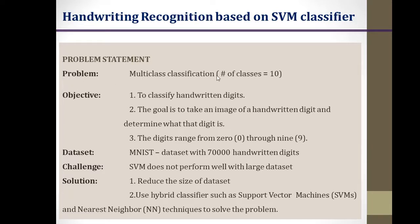This is the problem statement. We have considered handwritten digit recognition as our task. The handwritten digits range from 0 to 9, so the number of classes is 10. This classification task is basically a multi-class classification. The objective is to classify the handwritten digits — the goal is to identify the digit depending upon the input image fed to our machine learning model.